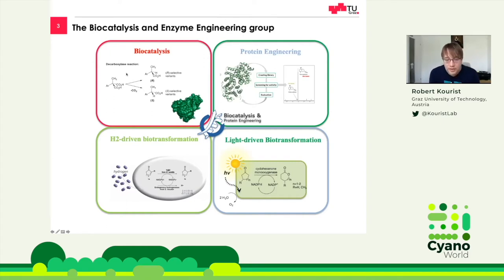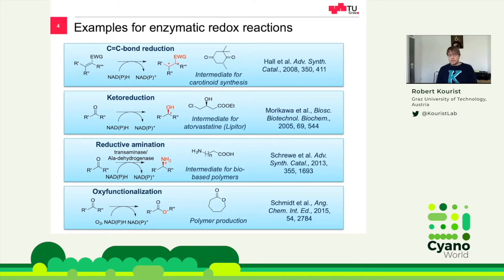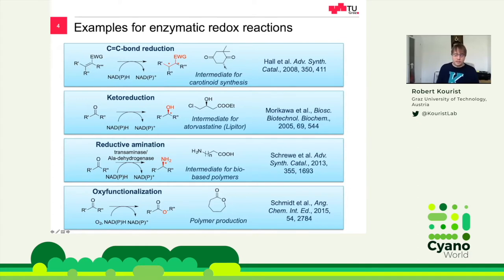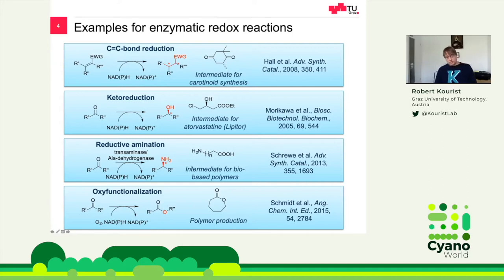For a couple of last years, we use enzymes for light-driven biotransformations and also for hydrogen-driven biotransformations. Here are a few examples of enzymatic redox reactions: the reduction of a double bond giving a stereocenter, or we can reduce the carbonyl group from a ketone to an alcohol — used for the production of an intermediate of atorvastatin. We can also make a reductive amination of a ketone to an amine, or insert oxygen into a molecule to produce epsilon-caprolactone, which is a polymer precursor.